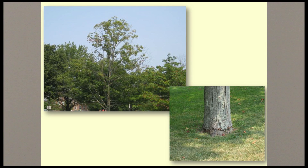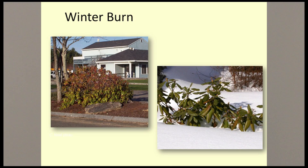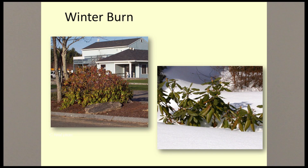This same pattern of top dieback can also be seen in trees with internal wood decay. Here's another example with symptoms at the top of the plant: the upper half of the rhododendron has brown leaves. This is typical winter burn and desiccation. The leaves remain green where the level of snow provided protection from the wind and sun, while the leaves above the snow line became burned and desiccated.